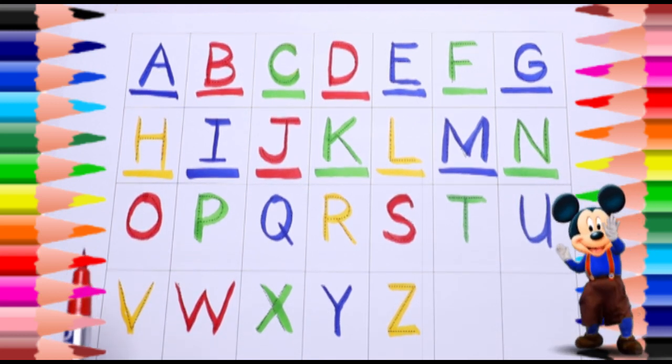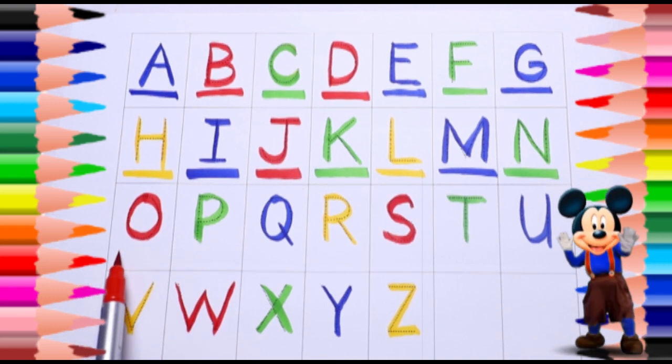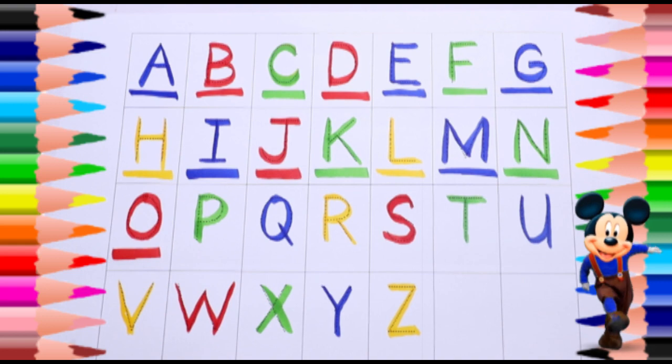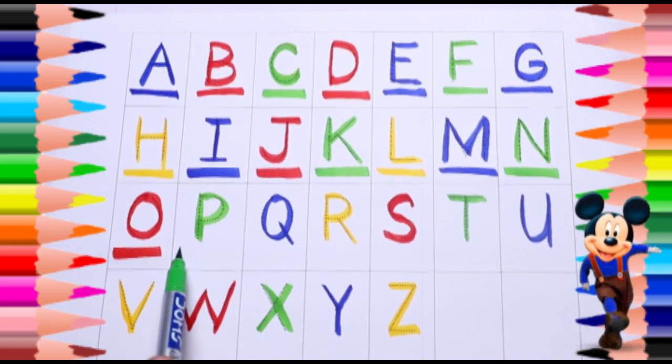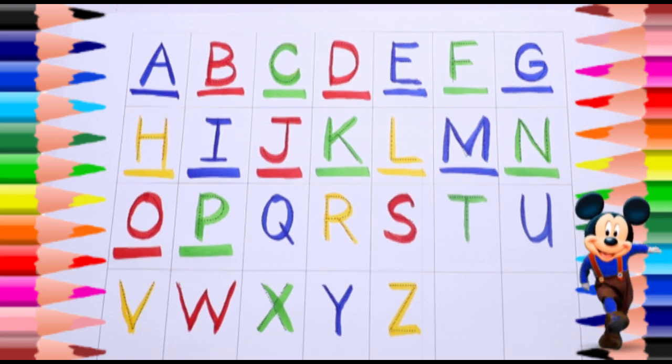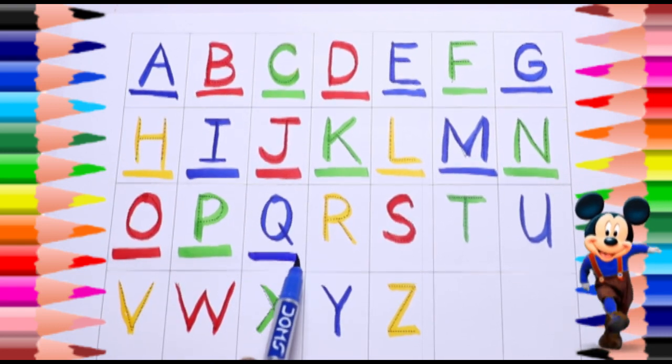Red color O, O for octopus. Green color P, P for parrot. Blue color Q, Q for queen.